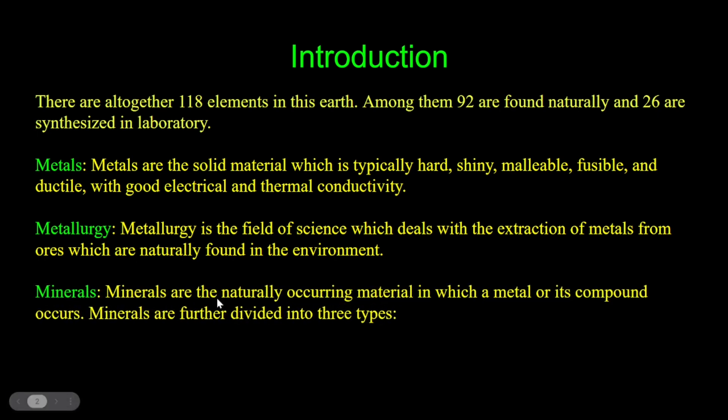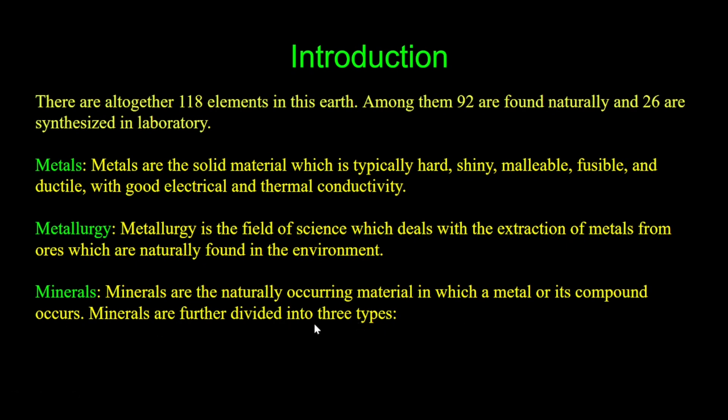Next, minerals. Minerals are the naturally occurring material in which a metal or its compound occurs. Minerals are further divided into three types.